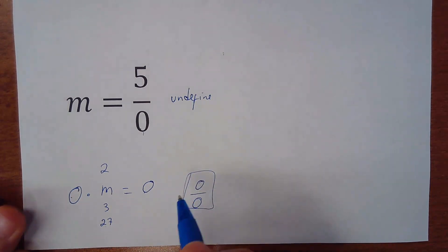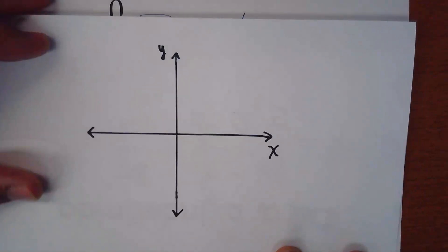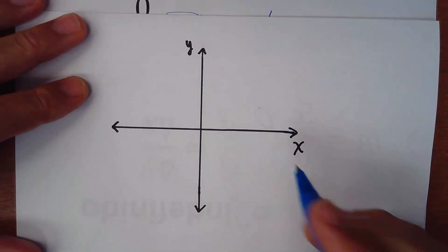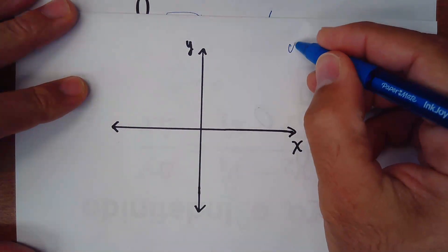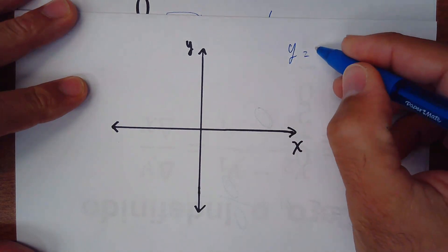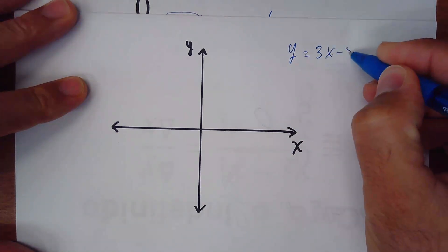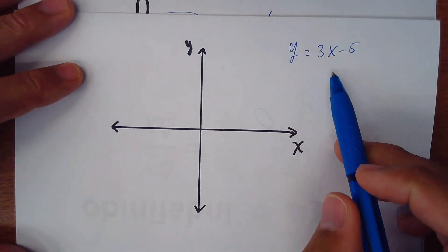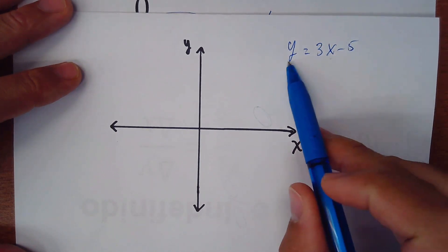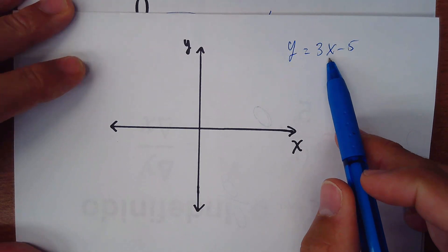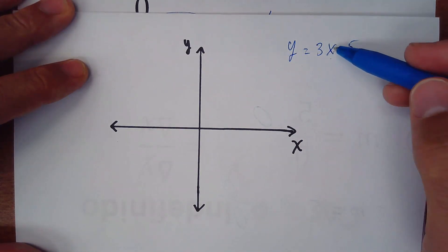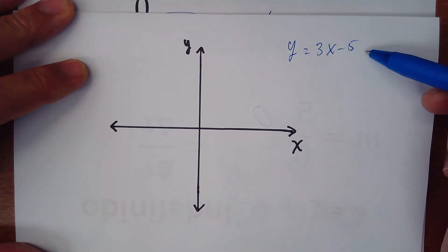Now let me show you a graph. We're going to talk about some equations. Let's suppose we have the equation of the line y equals 3x minus 5. We know that x is the independent variable and y is dependent. Y depends on x. So if x is 1, for example, 3 times 1 is 3 minus 5 is negative 2.